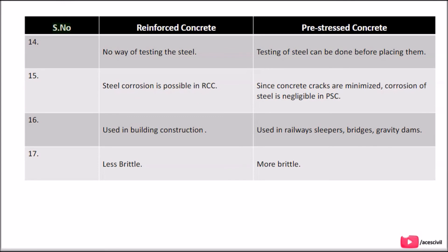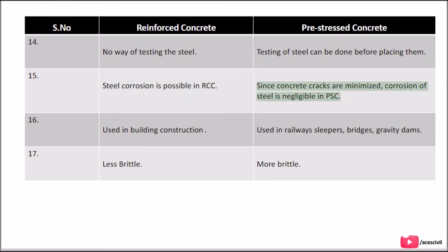Point 14: There is no way of testing the steel in RCC, whereas testing of steel can be done before placing them in PSC. Point 15: Steel corrosion is possible in RCC, whereas since concrete cracks are minimized, corrosion of steel is negligible in PSC. Point 16: RCC is used in building construction, whereas PSC is used in railway sleepers, bridges, and gravity dams. Point 17: RCC is less brittle, whereas PSC is more brittle.